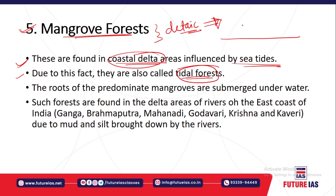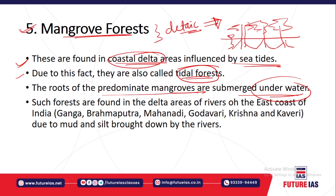These mangrove forests are found in coastal delta regions influenced by sea tides and are also called tidal forests. The roots are predominantly submerged under the water. Such forests are mainly found in the delta regions — for example, the deltas of Ganga, Brahmaputra, Mahanadi, Godavari, Krishna, and Kaveri.